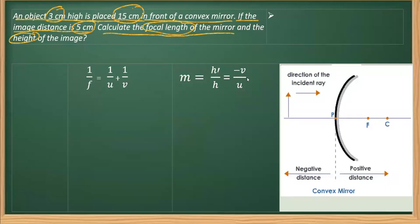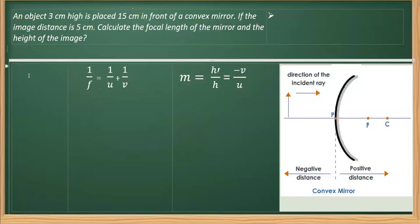First we need to write down the information symbolically. The height of the object is indicated by h, and h is 3 centimeter. The object distance is indicated by u, and it is always negative since the object is placed in front of the mirror — by convention the object distance is taken as negative.